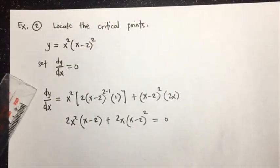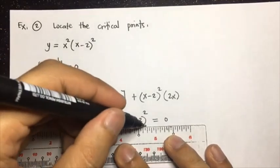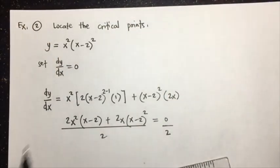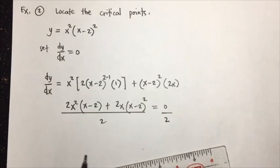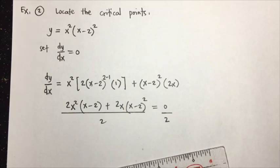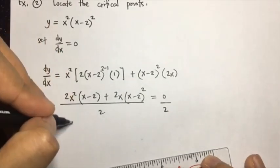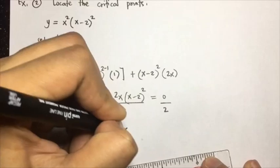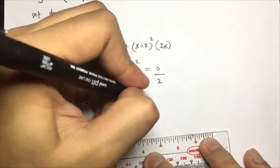We can see we have a common factor of 2, so we eliminate the numerical coefficient. Note that although x is also a common factor, we will not remove it because it will also remove one root — we only simplify numerical coefficients, not variables. This gives us x²(x - 2) + x(x - 2)² = 0.